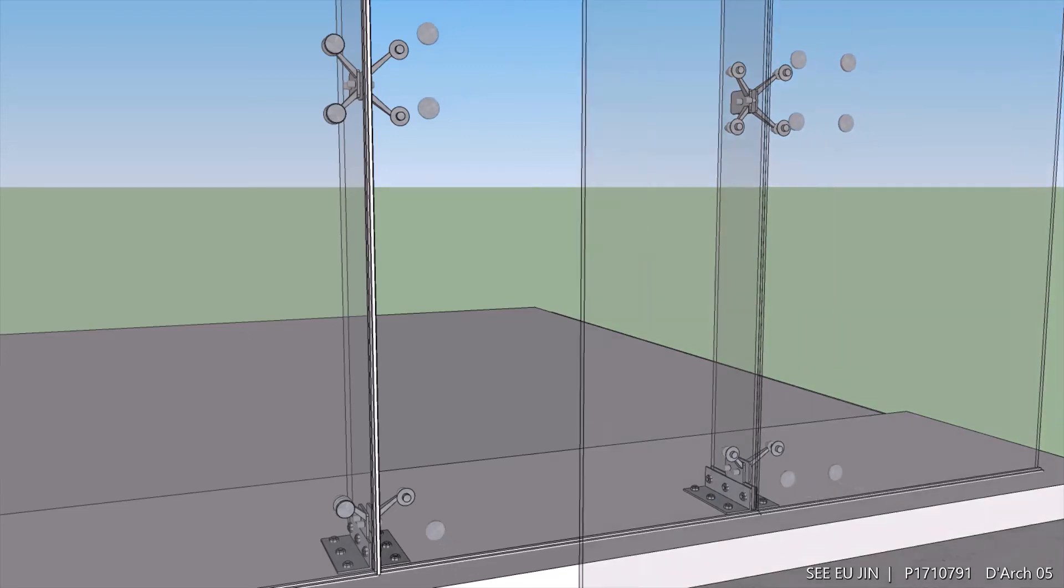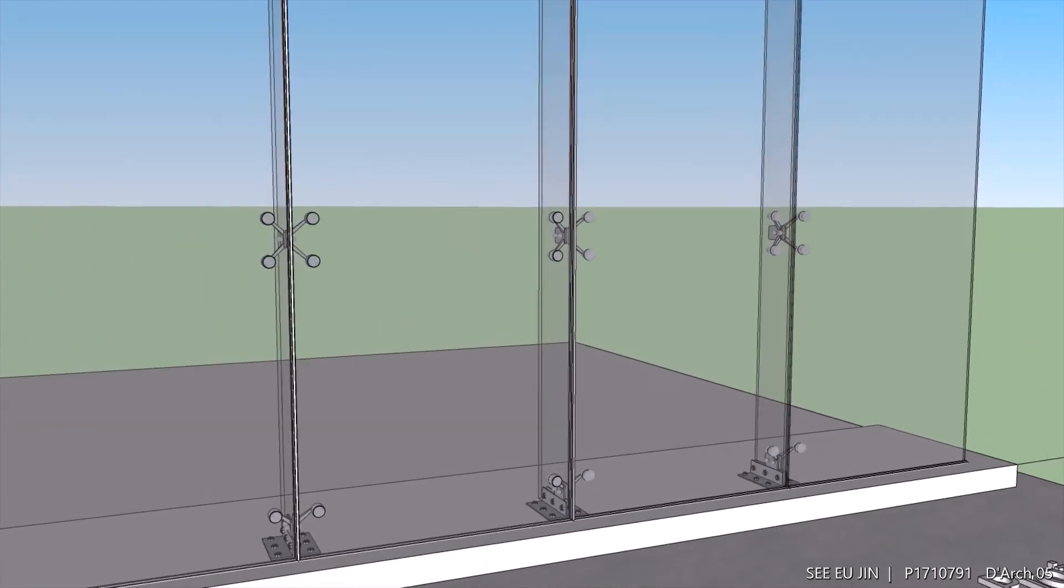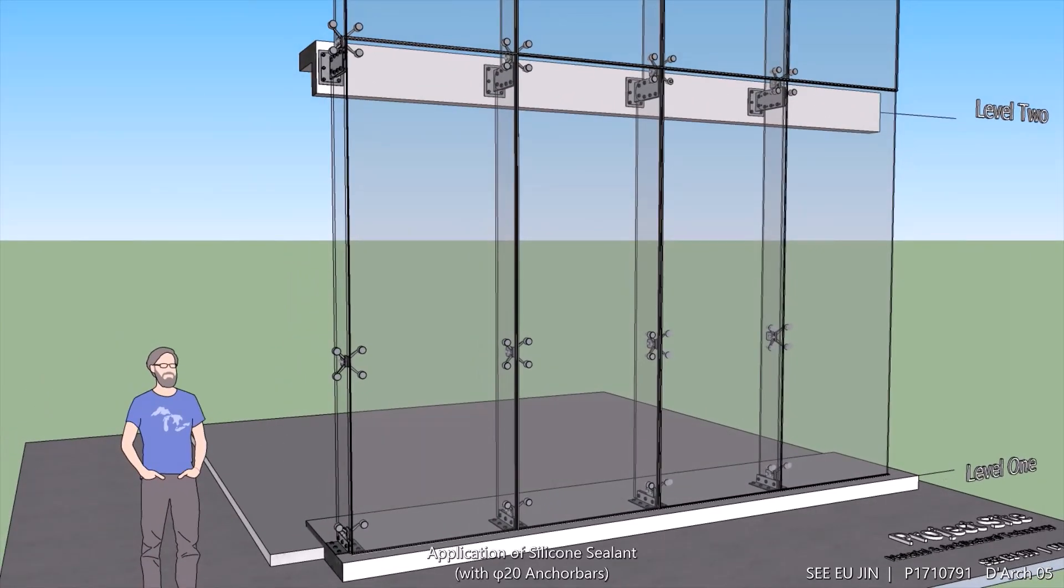Finally, to close the gaps in between the double glazed panels, white silicone sealants are being used with 20ft acrobar for air and water tightness as well as supporting the panels and increase the rigidity of the facade.